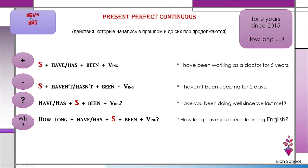Auxiliary verbs here are 'have' and 'has,' because it's perfect. The formula is: subject + have/has + been + verb-ing. 'Have/has' — because it's perfect. 'Been' + verb-ing — because it's continuous.